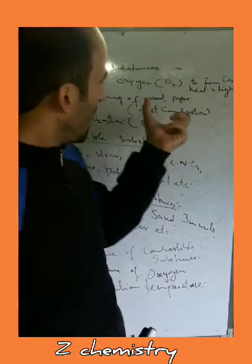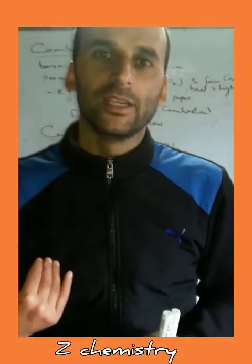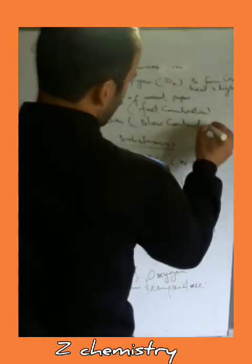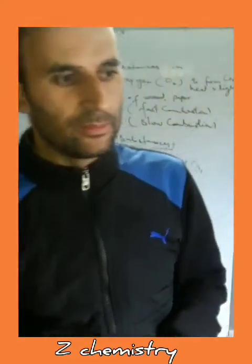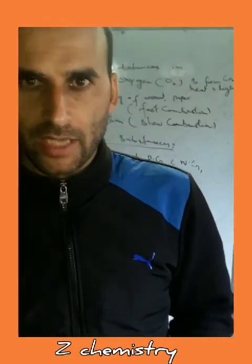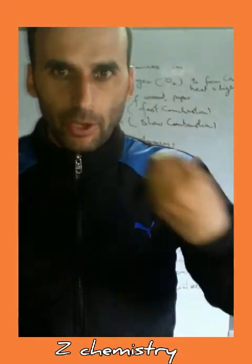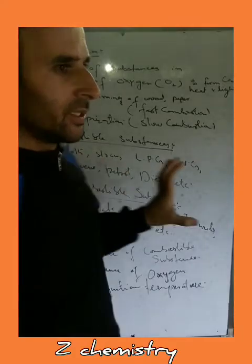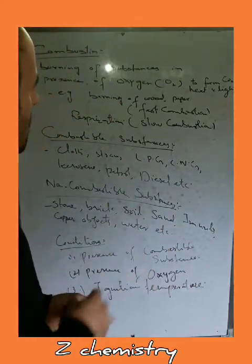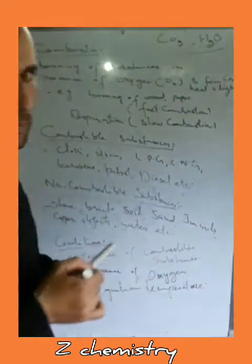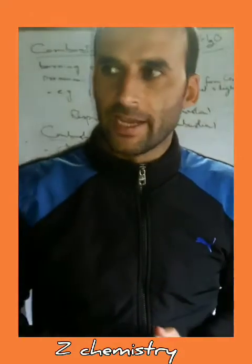Such combustions are very fast — they occur at a very fast rate. Such combustion is called fast combustion. However, there are certain processes, for example the respiration process. Respiration is an important process which occurs inside the cells of our body, in which food stored in the cells undergoes respiration, combining with oxygen to result in the formation of a lot of energy. Besides this, there is the formation of two byproducts — carbon dioxide and water — and that energy is used for carrying out various life activities.